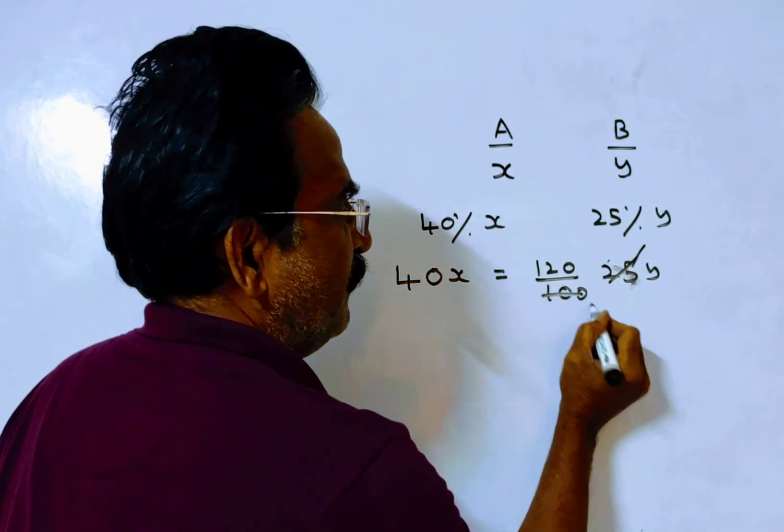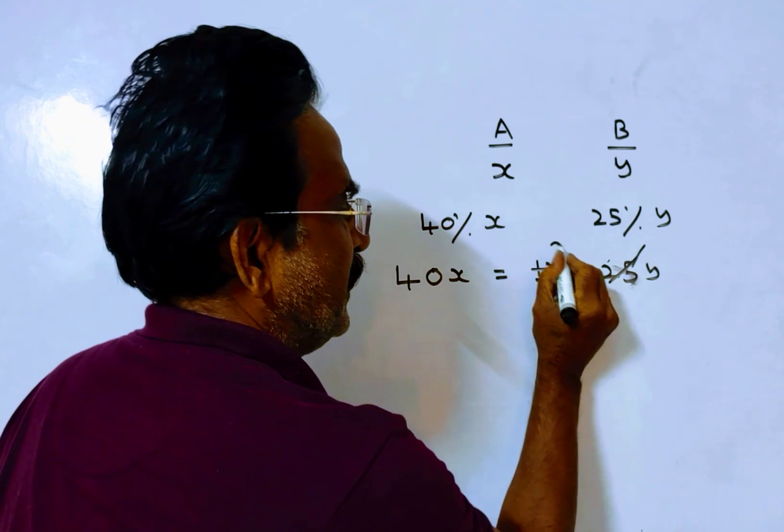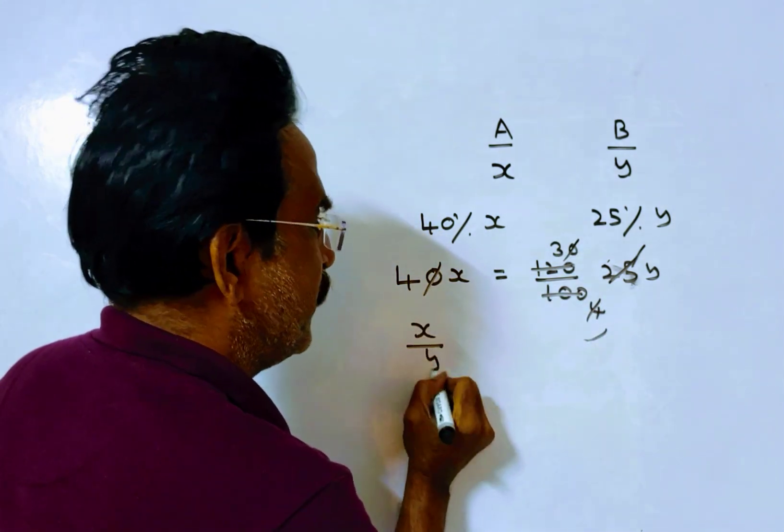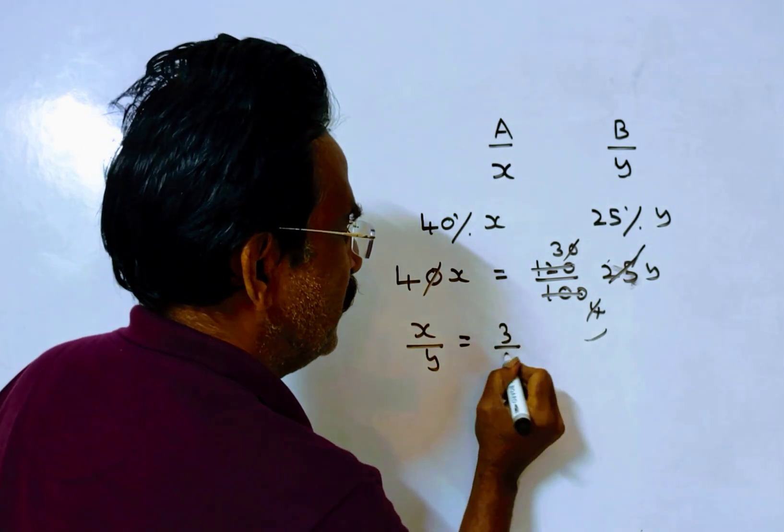25 1's, 25 4's, 4 1's, 4 30's. 0 0 gets cancelled. So X by Y is equal to 3 by 4.